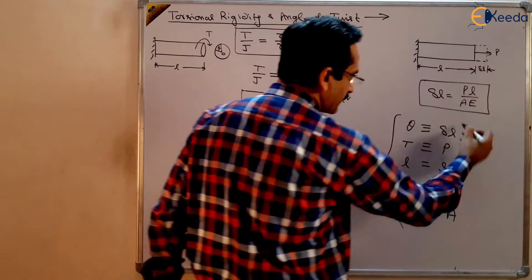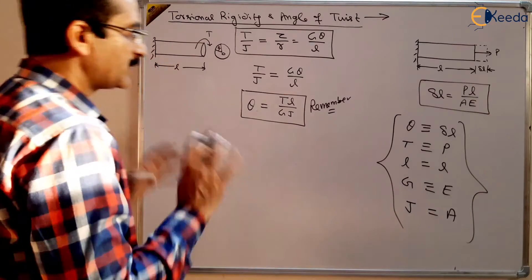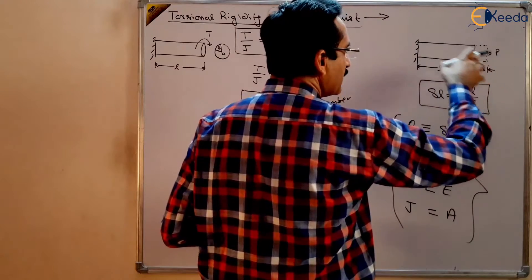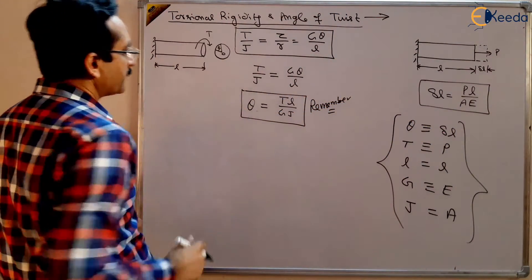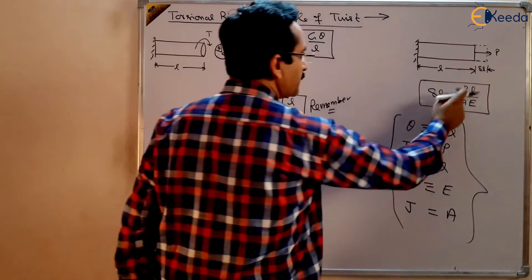This is quite similar terms. Not same things but some similarity is there. Deformation in a simple bar when the direct load is applied and where torque is applied. So theta is TL upon GJ and delta L is PL upon AE.